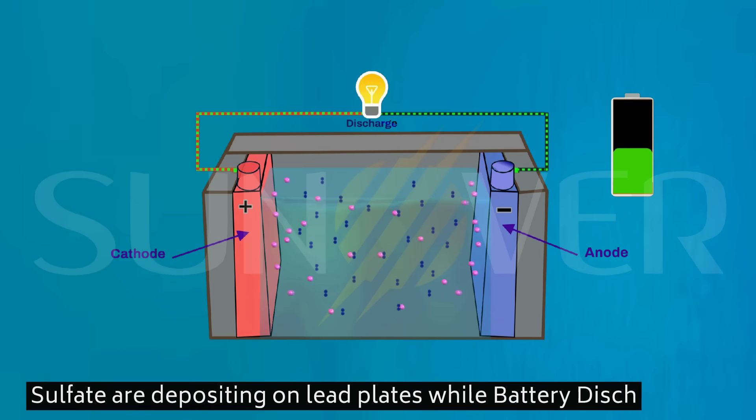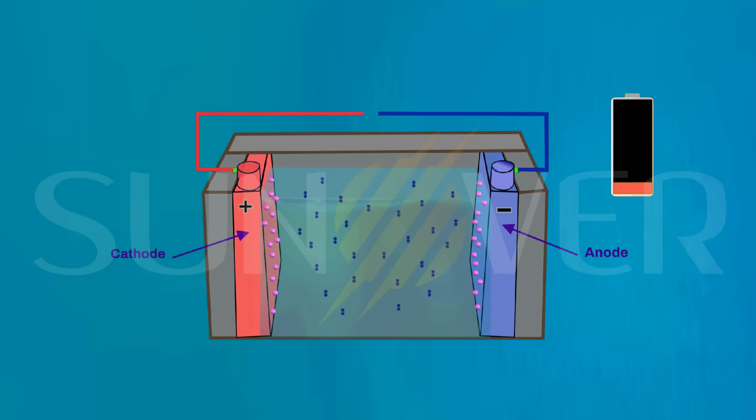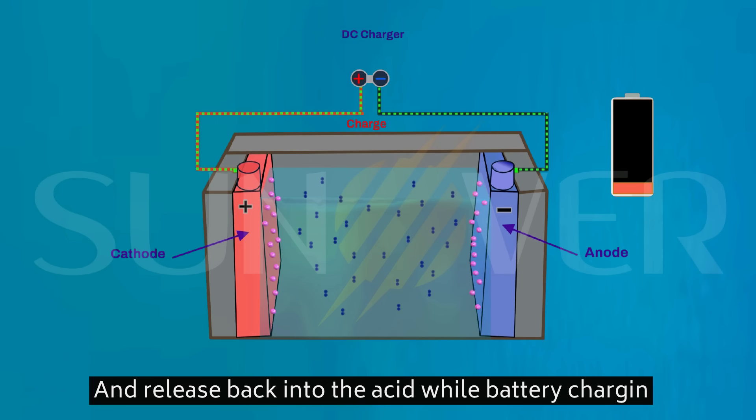Sulfate is deposited on the lead plates of the battery during the discharge phase and is released back into the acid medium upon recharging.